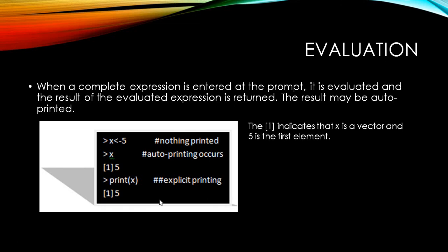Now the square brackets — this simply indicates that X is a vector and five is the first element. You don't have to be surprised by the square bracket; it simply indicates that the output is the first element. Now if you have a lot of elements and the line changes, and the second line starts at element 200, then you will get 200 inside the square brackets at the start of that line.